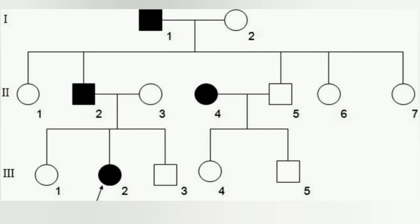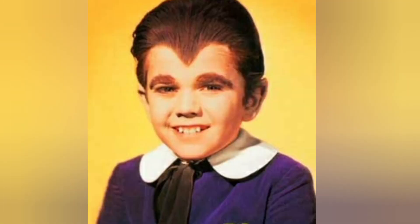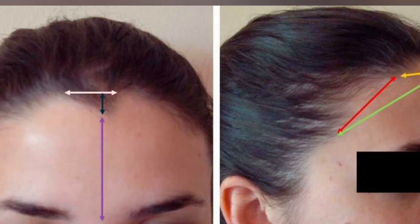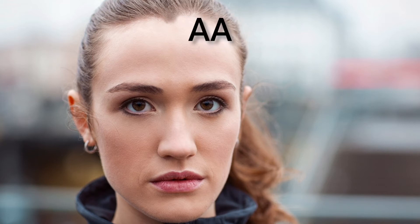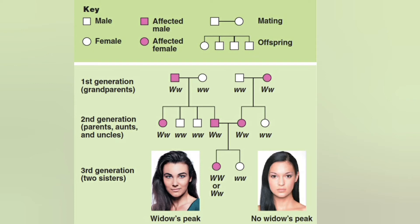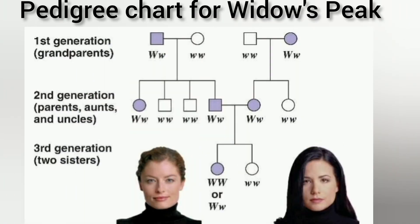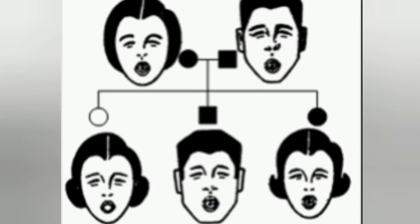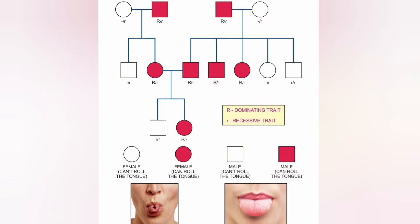Common examples of autosomal dominant traits are widow's peak and dimple in the cheek. Widow's peak is a V-shaped hairline across the forehead. It is a dominant trait, so both homozygous dominant (AA) and heterozygous (Aa) individuals have widow's peak, while homozygous recessive (aa) individuals have a straight hairline. An outline pedigree chart showing the analysis of widow's peak is shown here, followed by another chart showing the tongue rolling capacity — also an autosomal dominant trait.